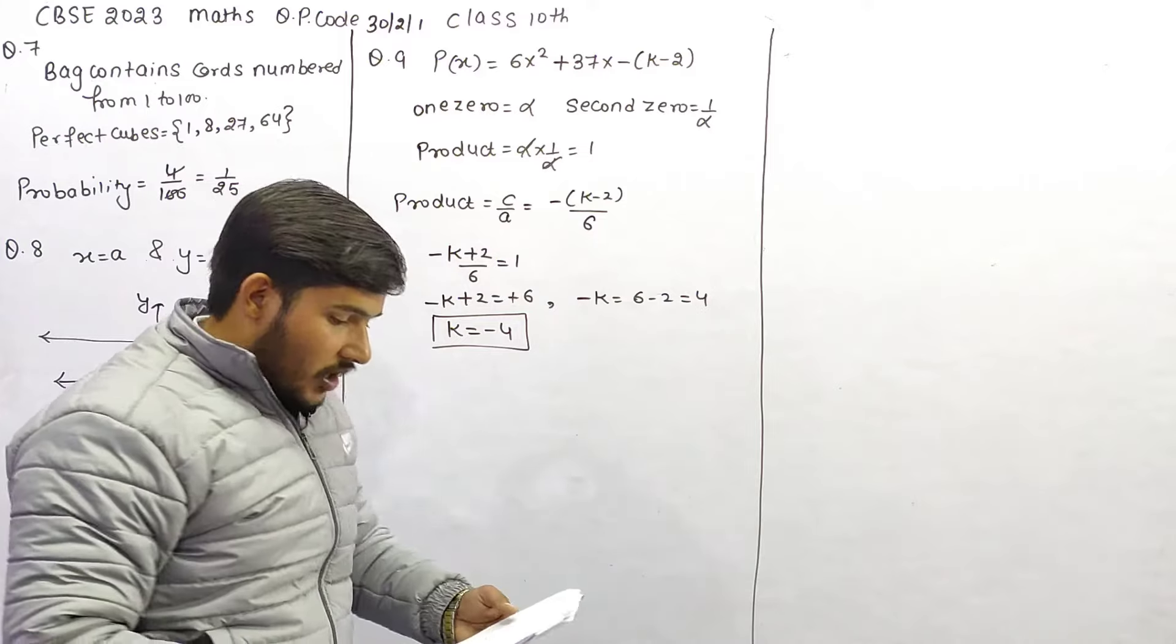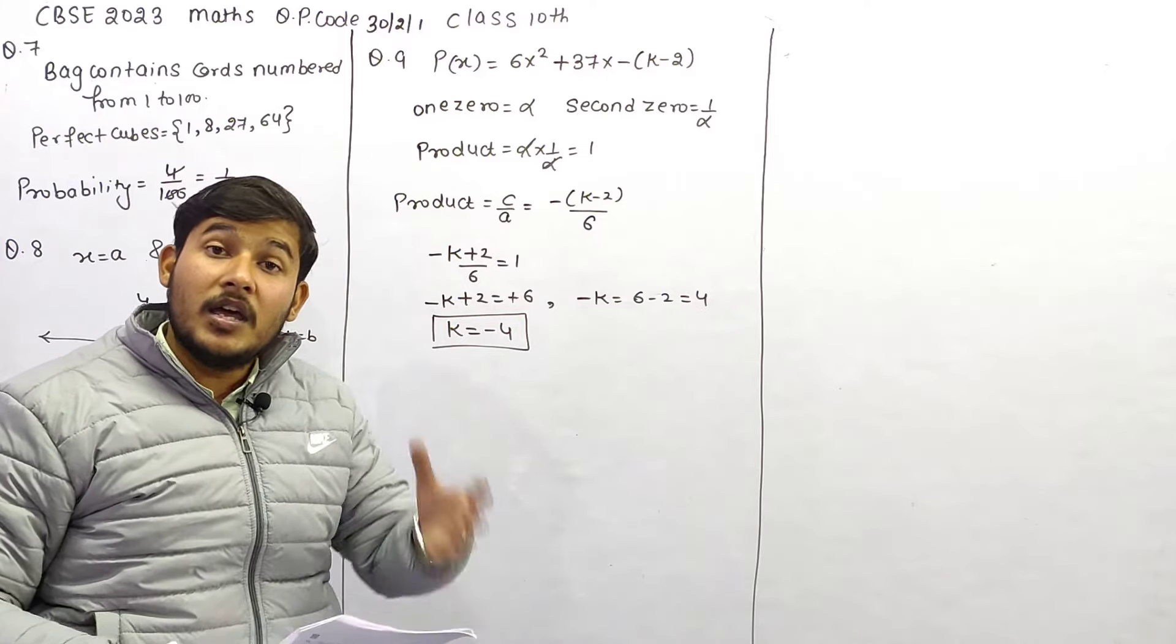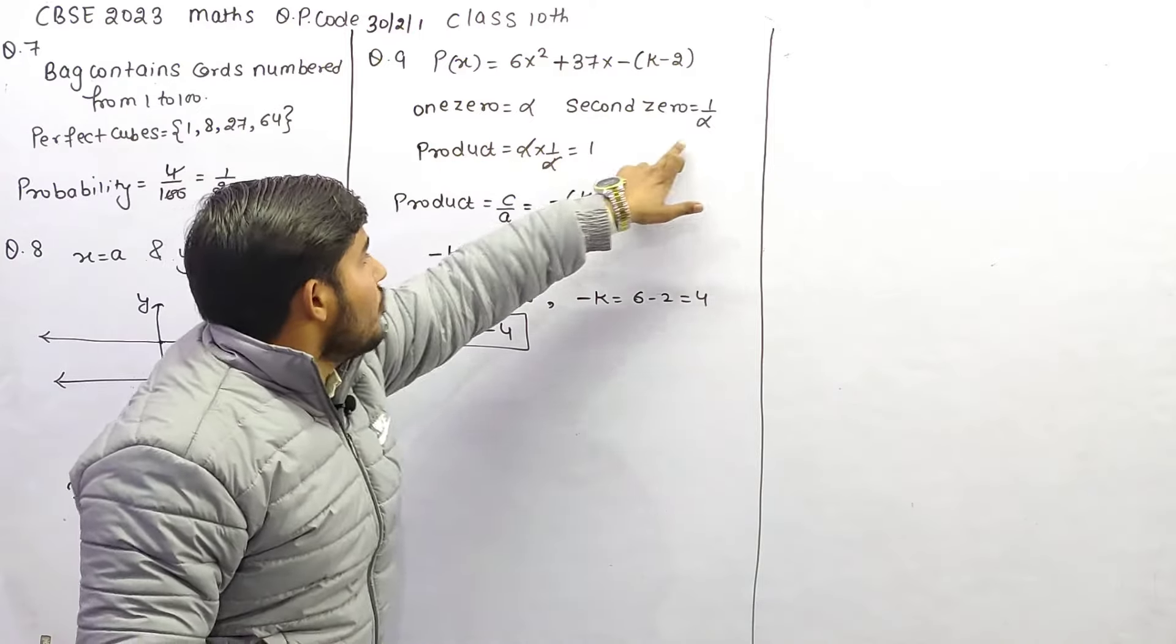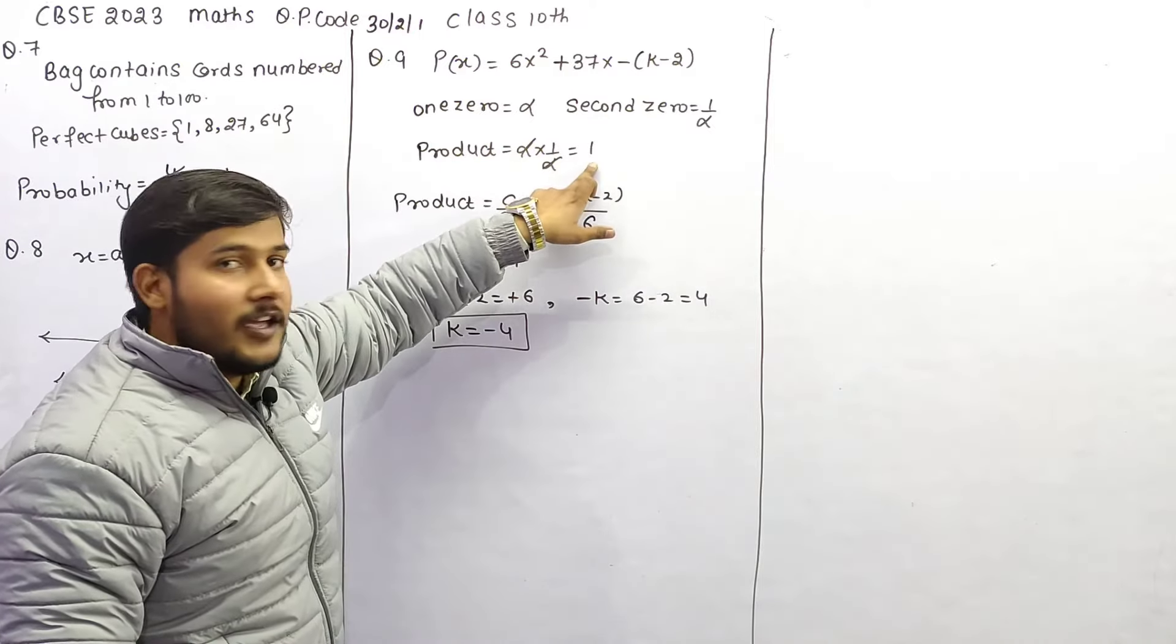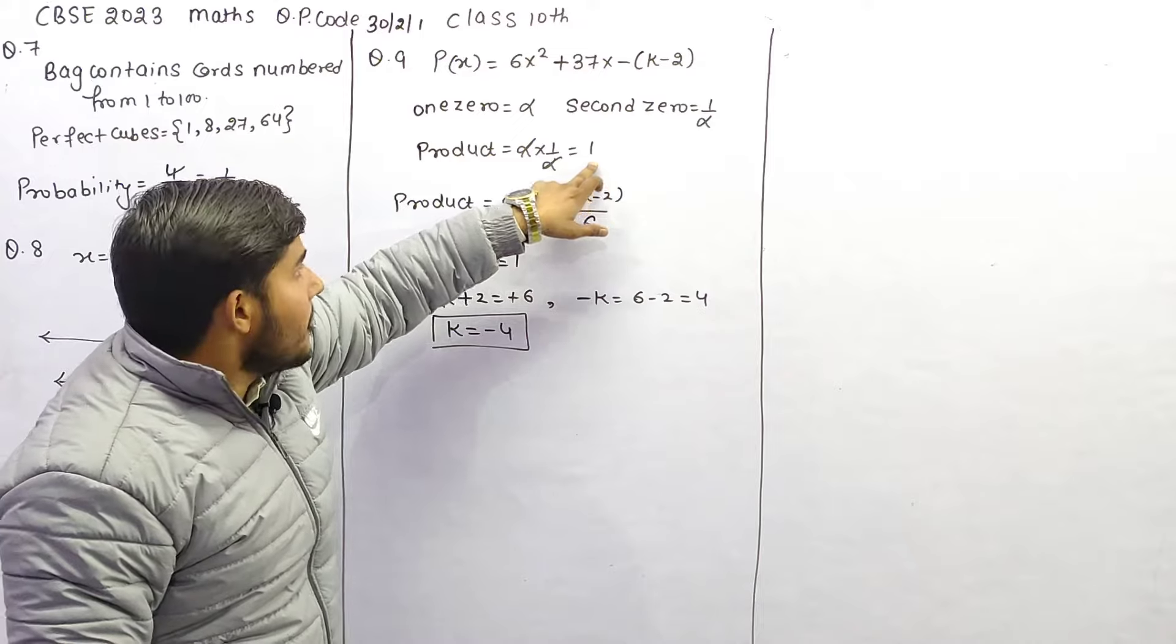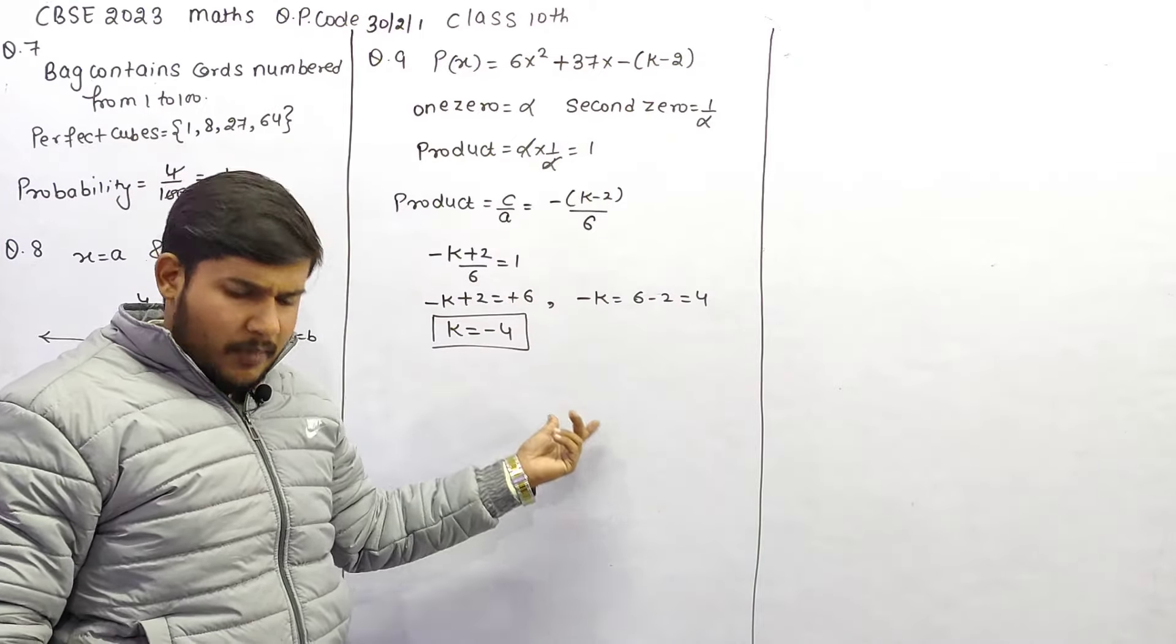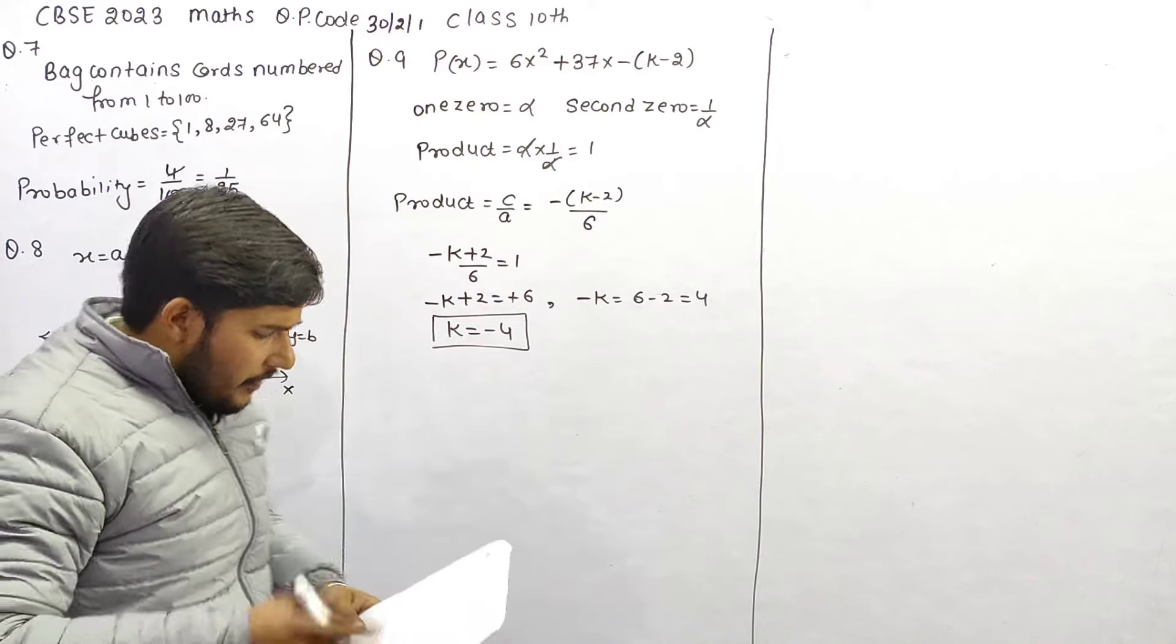तो हमारे पास जो K है वो minus 4 आ रहा है, केवल आपको थोड़ा logic लगाना होगा, कि दोनों का जो product है वो one आ रहा है, एक तो यहां से निकाल लिया, और एक formula का use करके, फिर दोनों को बराबर रखो, और simply आप निकाल पाओगे,